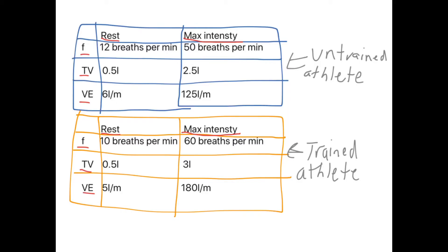Get down these two tables and learn the values, then make Brainscape flashcards. For example: 'State the tidal volume for an untrained athlete during maximal intensity exercise' — answer: 2.5 litres. Or: 'State the breathing frequency for a trained athlete at rest' — answer: 10 breaths per minute. These facts will likely appear as single-mark or multiple-choice questions in the exam.